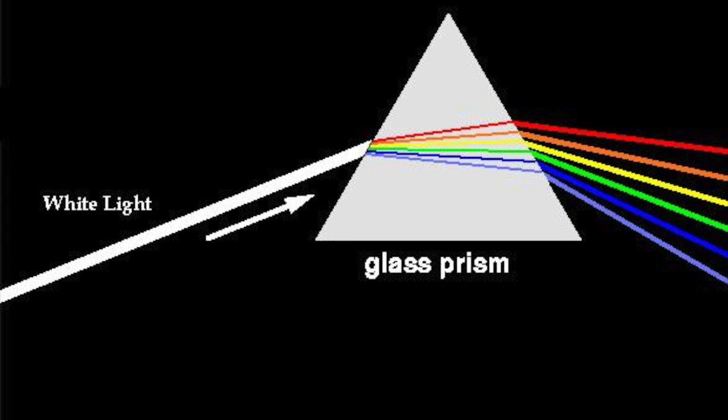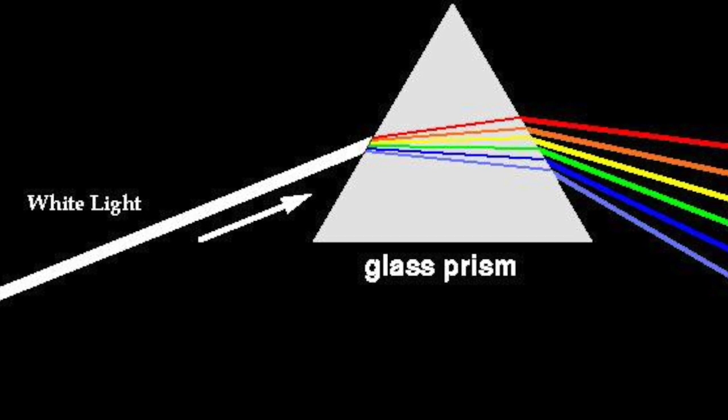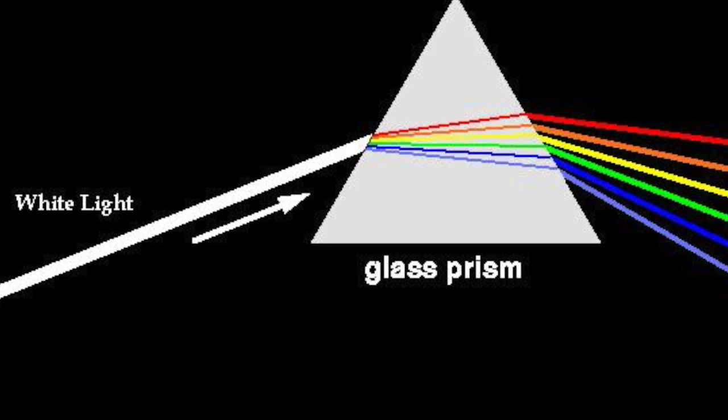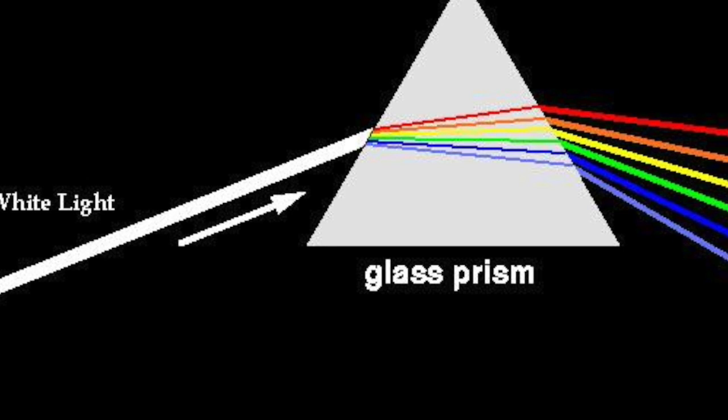The amount of refraction depends on the medium and the speed of light through the material. Light moves slowest through solids like glass or diamond, followed by liquids, and finally, light moves fastest in air.